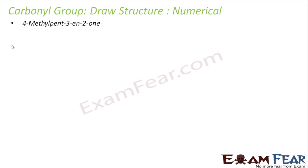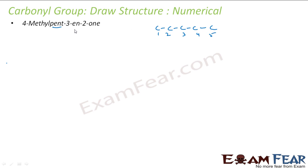Similarly, 4-methylpent-3-en-2-one. So it is pent — let's draw 5 carbons: 1, 2, 3, 4, 5. Pent is done. Let me number it: 1, 2, 3, 4, 5. At 3, I have ene — let me put a double bond at 3. At 2, I have one — let me put a ketone at 2. At 4, I have methyl — let me put a methyl at 4. You can add remaining hydrogens. This is the structure.